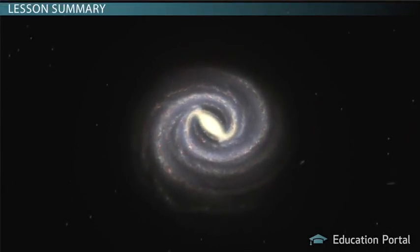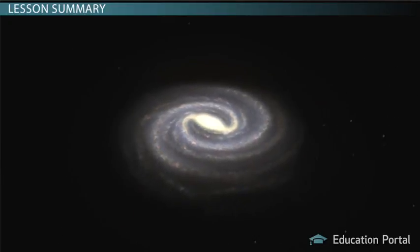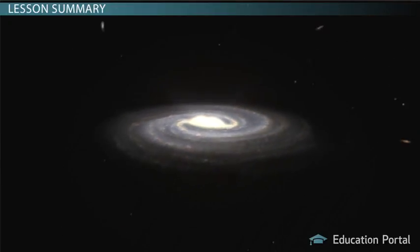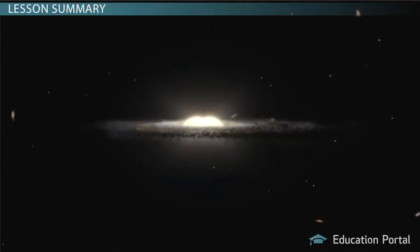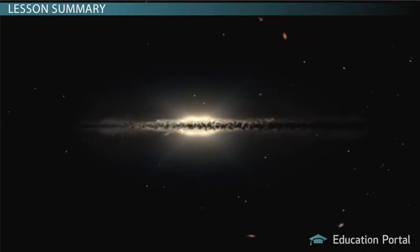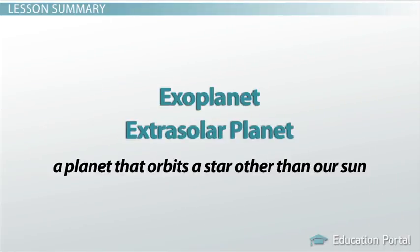We are not alone. There may be many Earth-like planets, and there may be little green men and women in them. Who knows? What we know for sure is there are indeed exoplanets or extrasolar planets, which are planets that orbit a star other than our sun.